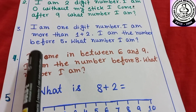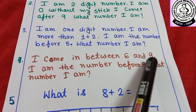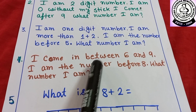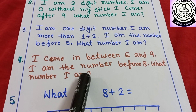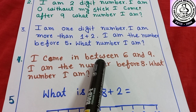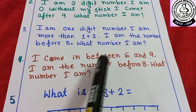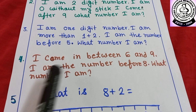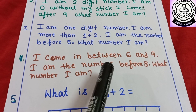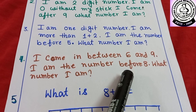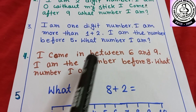Number 4. I come in between 6 and 9. I am the number before 8. So, what number am I? I come in between 6 and 9. I am the number before 8. What comes before 8? 7. You are right! So, the answer is 7.